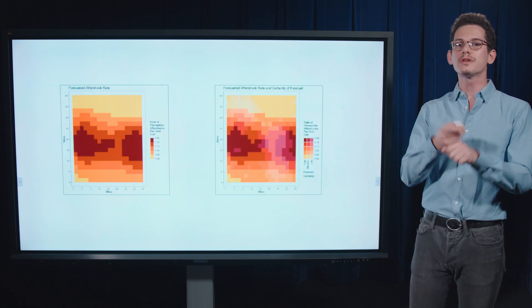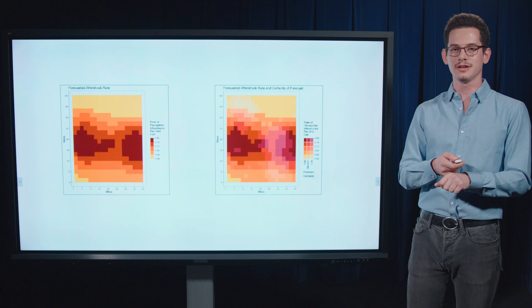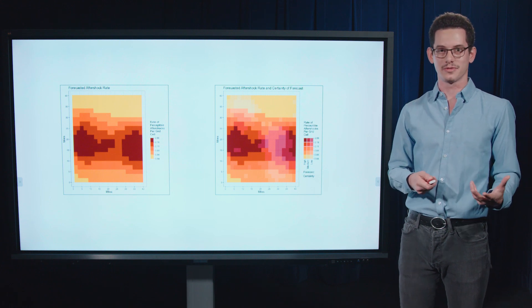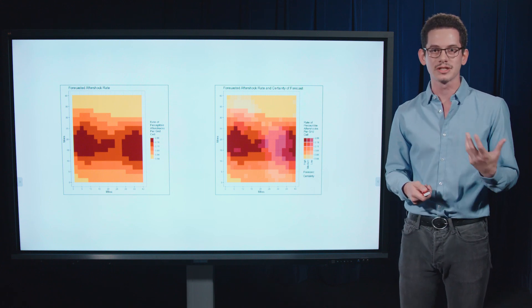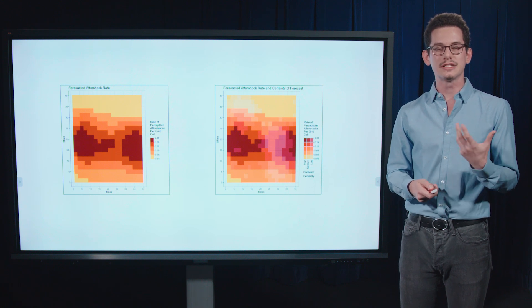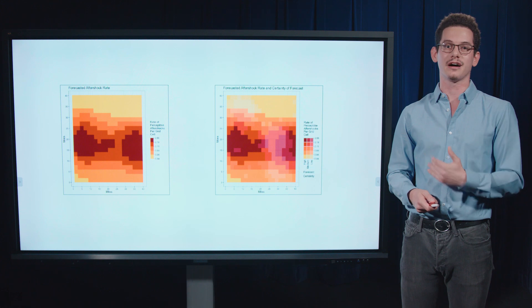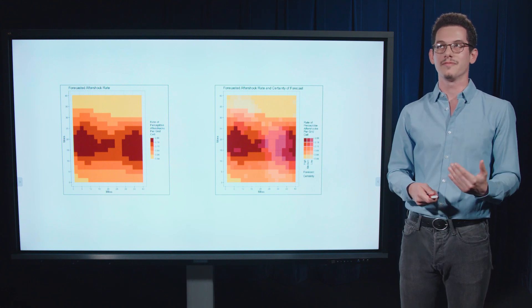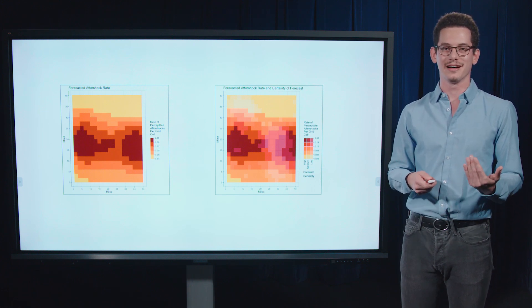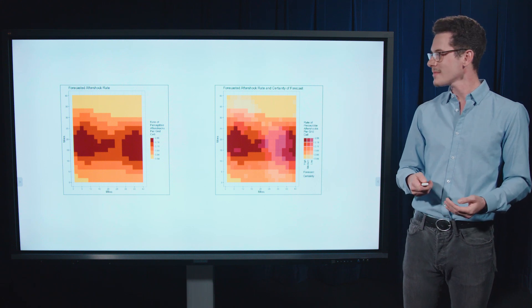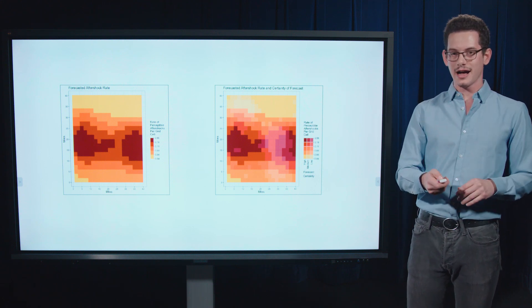Now we can overlay those two maps together in this bivariate approach. And typically the visualization literature really supports using transparency of the color as a way of showing the certainty level of the forecast. So we're testing that, and we're also testing a kind of statistical approach to this UV problem.